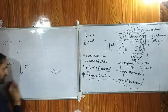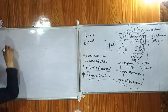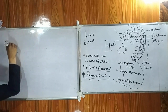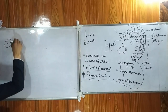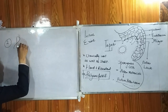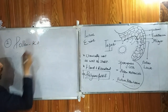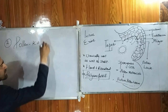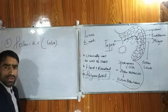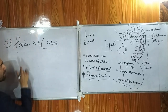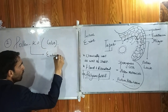After sporopollenin, we discuss the second important function of the glandular type of tapetum. The tapetum has also been found to secrete another important material called pollen kit. The pollen kit is primarily found in entomophilous flowers — flowers pollinated by insects.